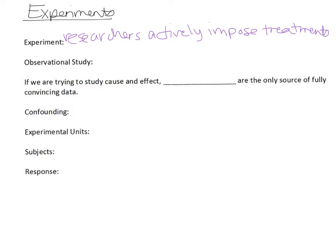After the researchers impose the treatments, they then measure how these individuals respond. That's the first type of study. The second type is called an observational study, which occurs when researchers passively observe individuals and do not impose any sort of treatment.